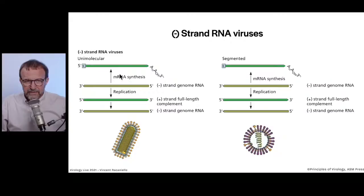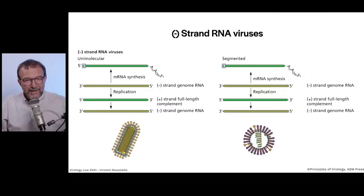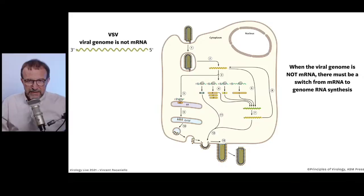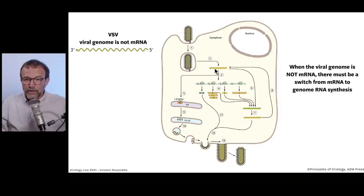Now let's go to minus-strand RNA viruses — two kinds. First, viruses where the genome is one minus RNA: vesicular stomatitis virus (VSV). The genome is a single minus-stranded RNA that has to be both replicated and serve as template for mRNAs. Second, influenza viruses — same question, with a segmented genome of eight minus-stranded RNAs. For VSV, the genome is not mRNA, obviously, because it's minus-stranded. It's released into the cytosol after uncoating, cannot be engaged by ribosomes, so it brings in a polymerase which synthesizes first a set of subgenomic mRNAs that encode the viral proteins.